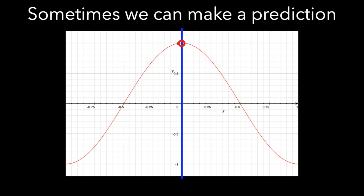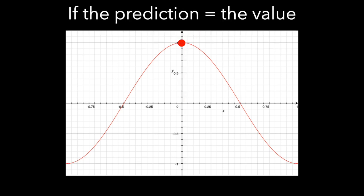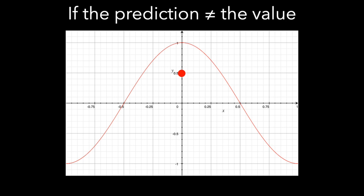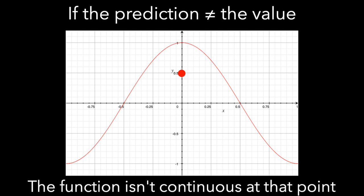And now the final piece. When we remove that little mask, if the prediction actually equals the value, in that case we say the function is continuous at the point. On the other hand, if the prediction doesn't equal the value, then the function isn't continuous at the point.